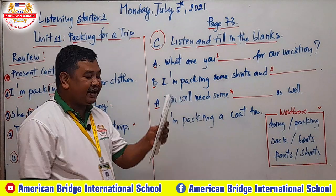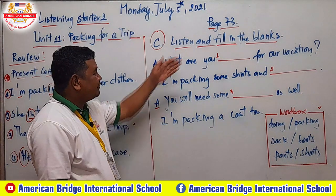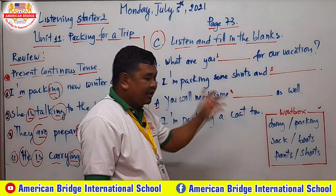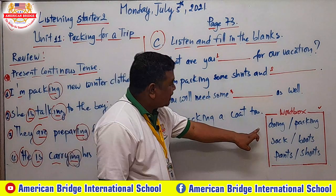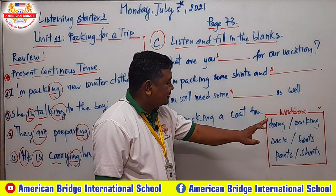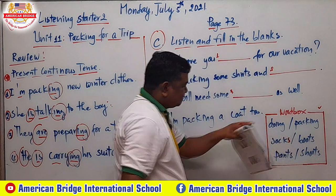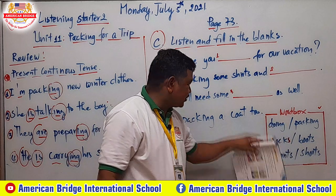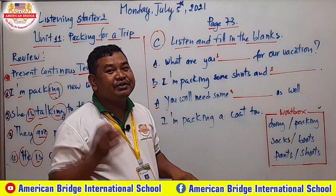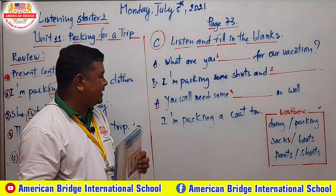Now move to part C: listen and fill in the blank. We have three numbers — one, two, and three — and you have to select the correct word from the box to complete each sentence. The words in the box include: packing, socks, boot, coat, and pants. Listen and fill in the blank now, students.